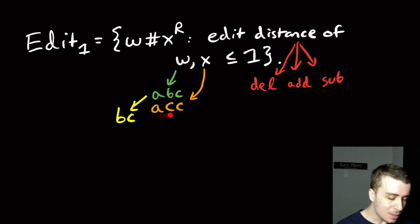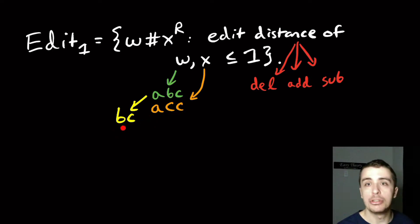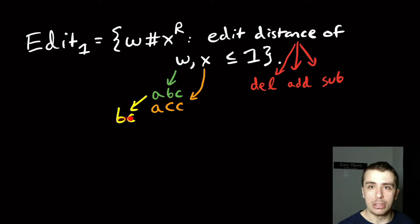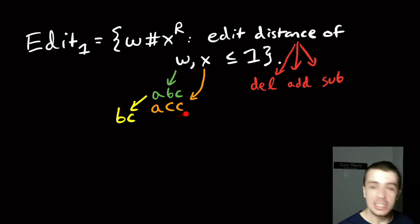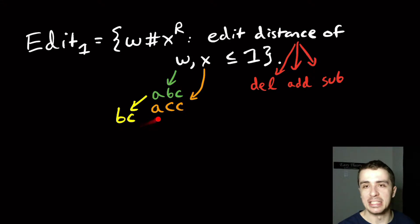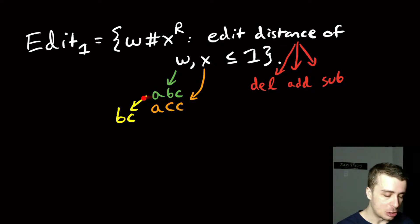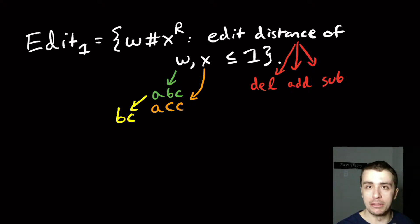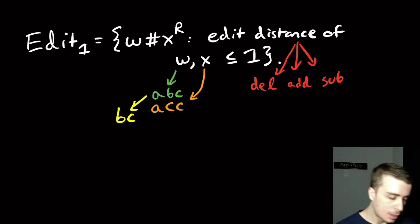But the orange string and the yellow string are not within edit distance one, because the only option would be to add a character — and this string has no b's in it — so they are at least edit distance two apart. In fact, the distance is exactly two: we can add the character 'a' and then substitute, reversing the transformation we did.